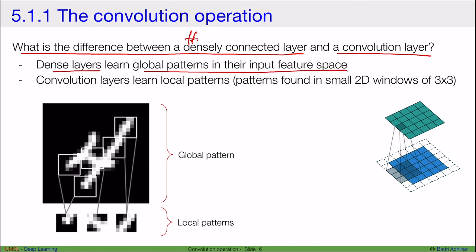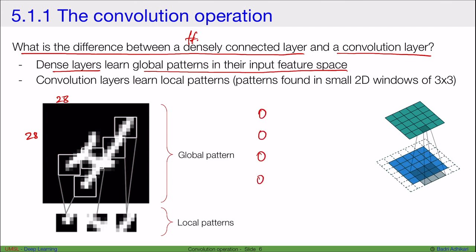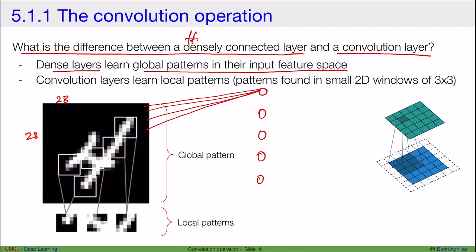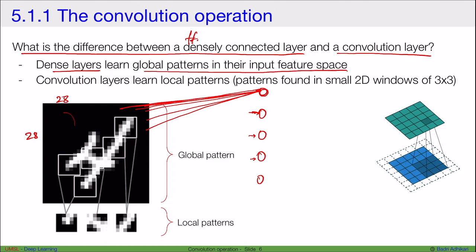If we have an image of size 28 by 28, then a dense neural network with say five neurons in the first layer means each neuron will receive input from each pixel of this image. Since each neuron gets to see the entire picture as input, they have the ability to learn global patterns in the input feature space.